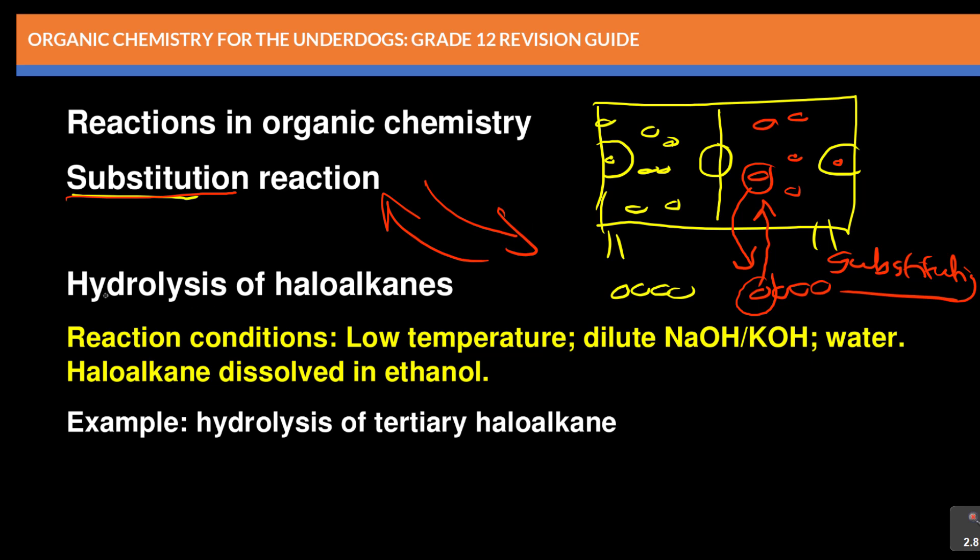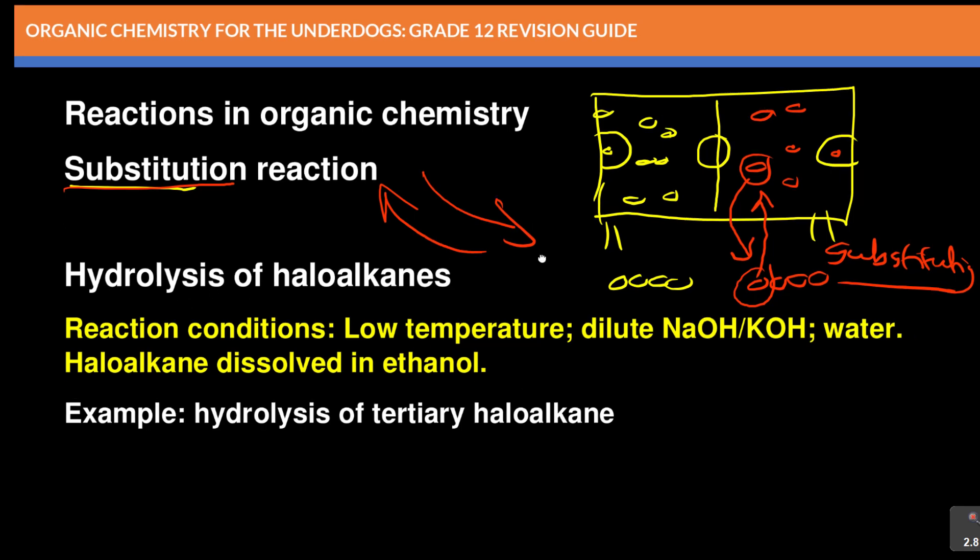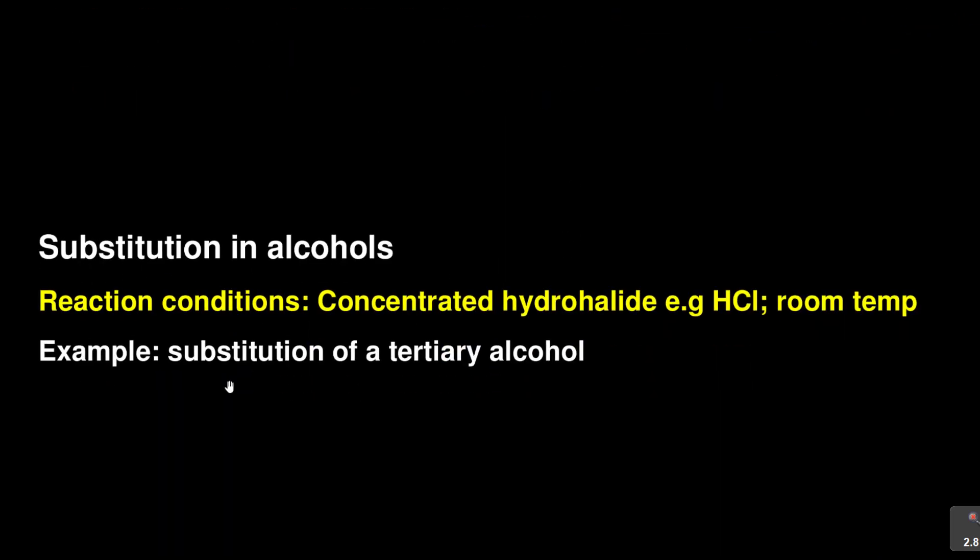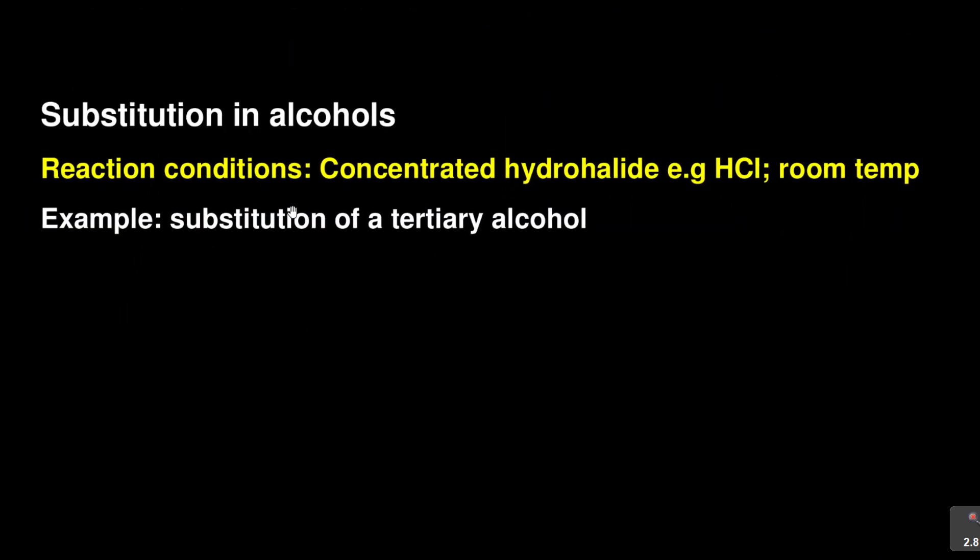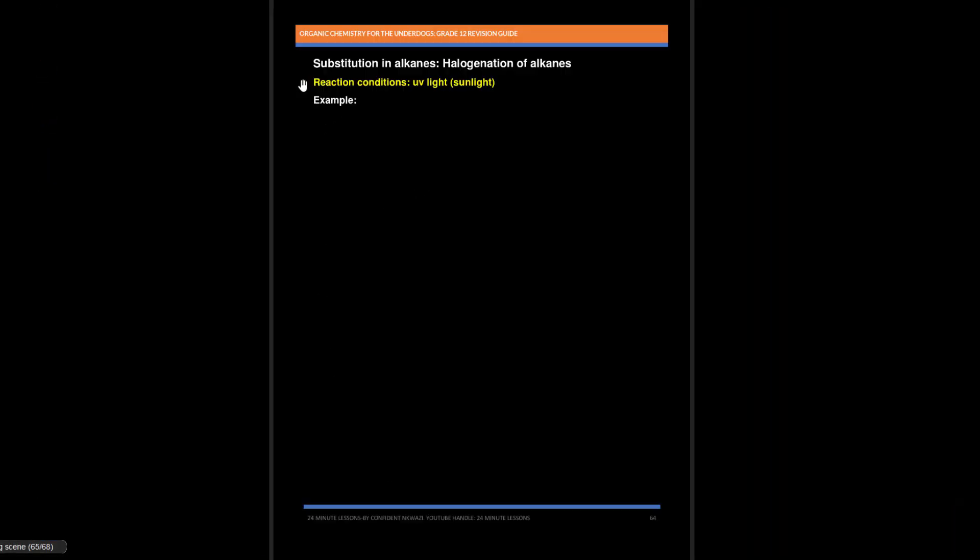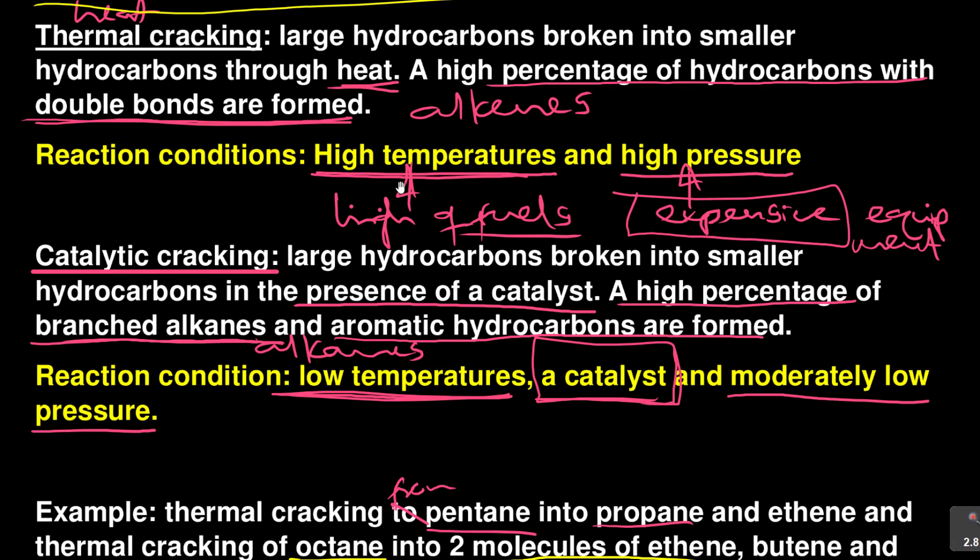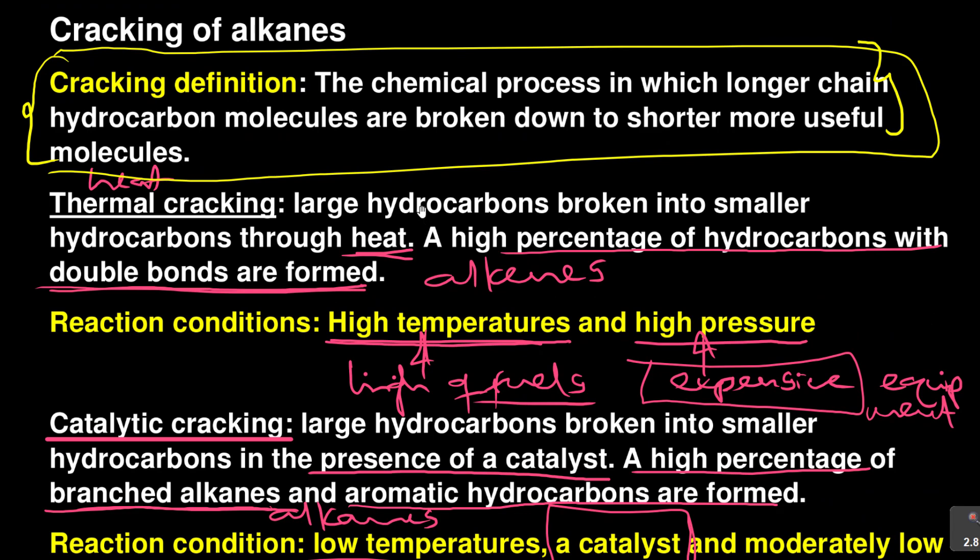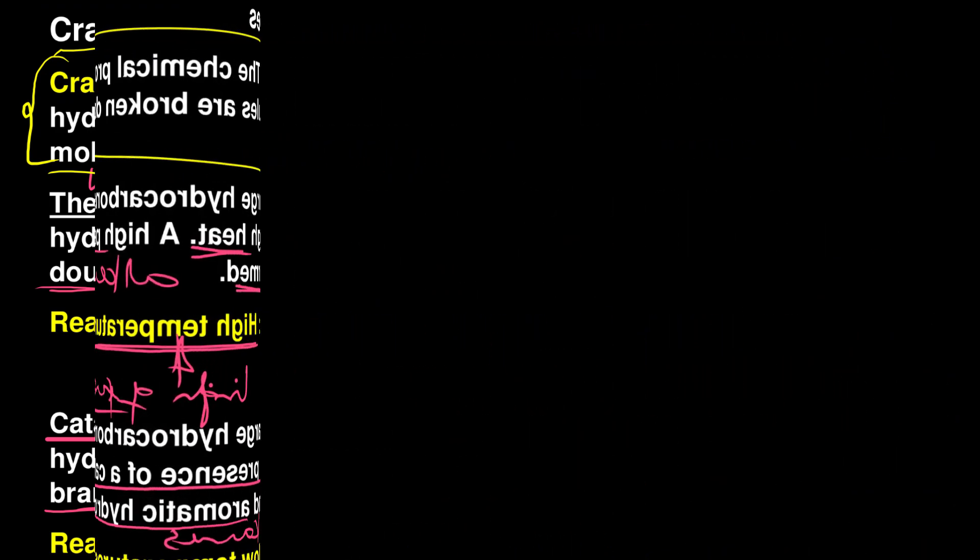Even in organic chemistry, there are such reactions called substitution reactions, whereby something comes in and another one goes out. The first one is hydrolysis that we're going to look at, and then substitution in alcohols, and substitution in alkanes. Those are the three main ones we're going to look at. Join me in the next lesson. We've come to the end of our lesson. Thank you.